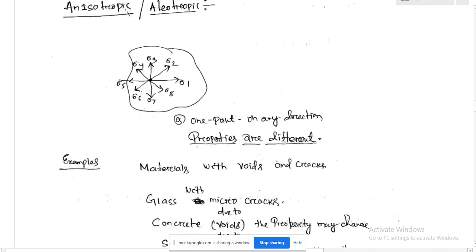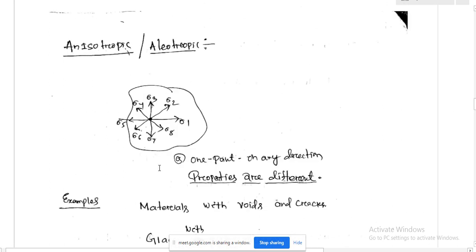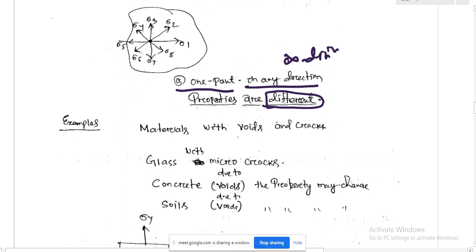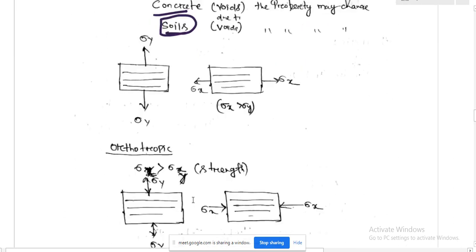Anisotropic means at one point in any direction — infinite directions — the properties are different. Examples of anisotropic materials are glass with micro-cracks, concrete, and soil, which is a stratified material.